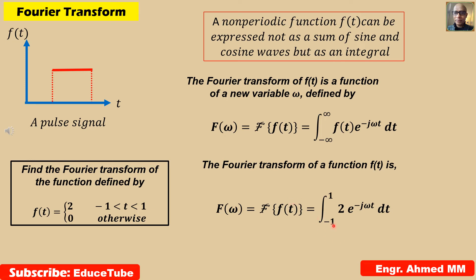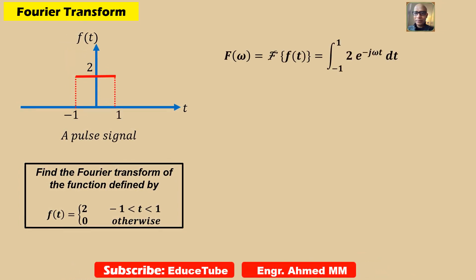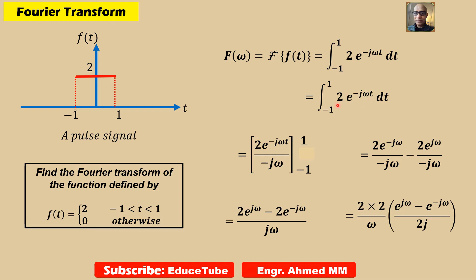Performing the integration, we get 2 times e to the minus j omega t divided by minus j omega, evaluated from minus 1 to 1. Rearranging, we put the positive exponential at the beginning to prepare for applying Euler's relation.